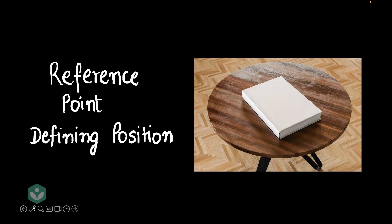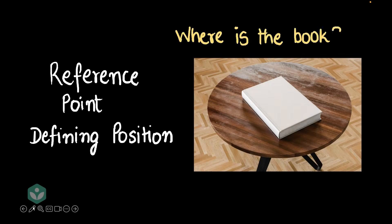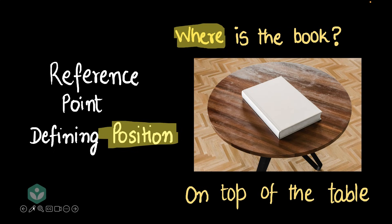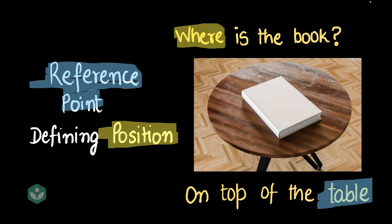Let me give you an example. If I showed you this picture and asked you the question, where is the book? 'Where' is asking about describing the position of the book. Your answer is going to be 'on top of the table.' If you pause and think about this, to describe the position of the book, you started using the table as a reference.